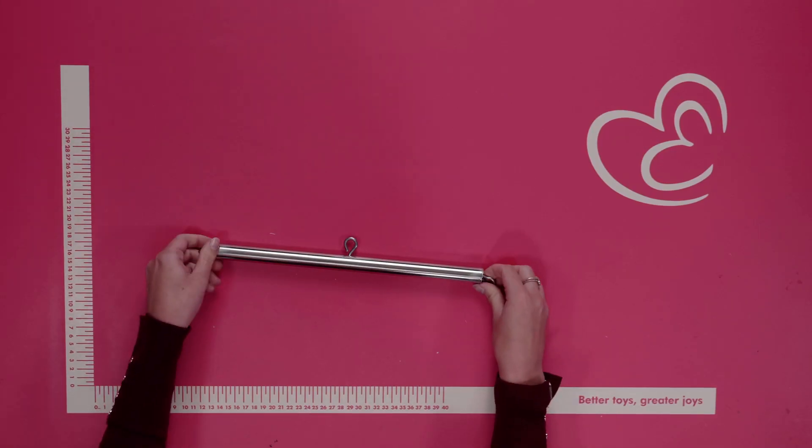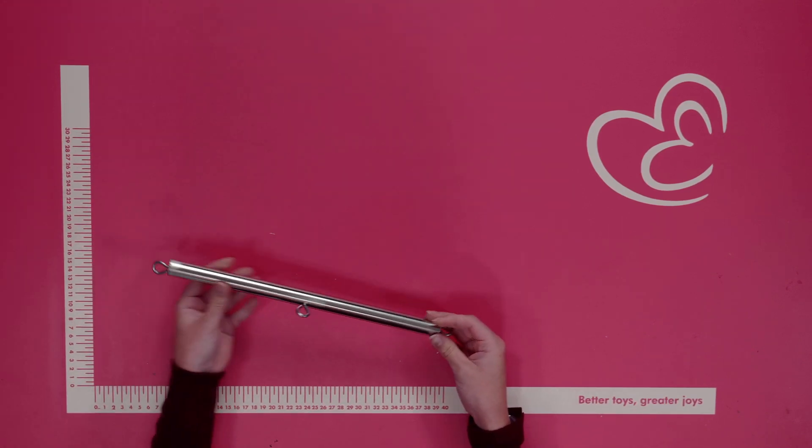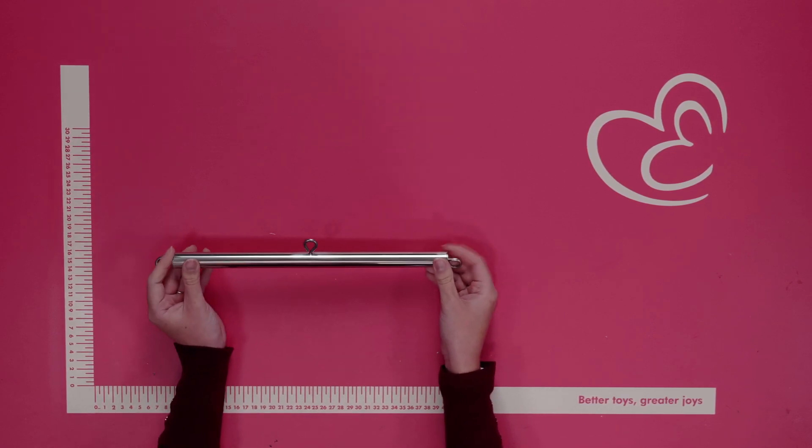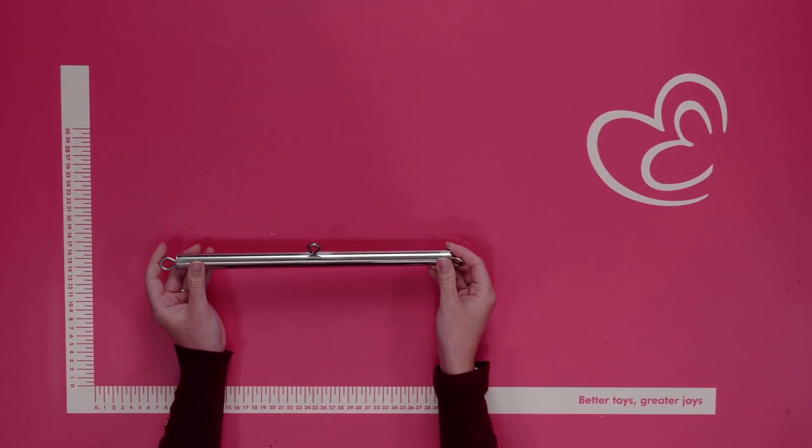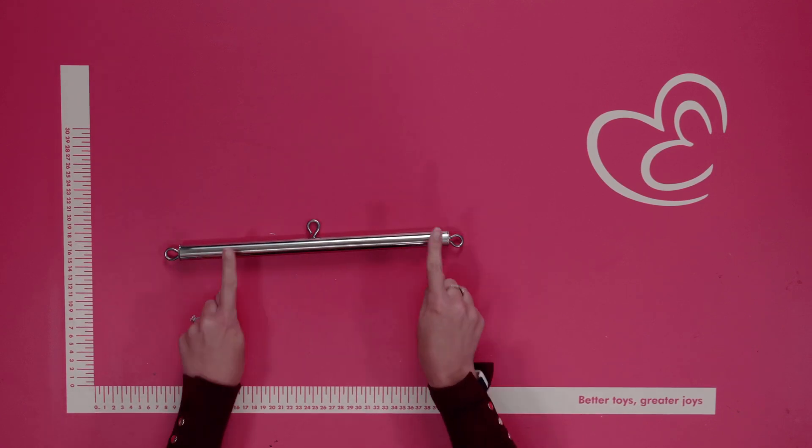So this is the Synergear spreader bar itself. Now this is shown here in 30 centimeters, however it is also available in the size 45 centimeters and 60 centimeters as well.